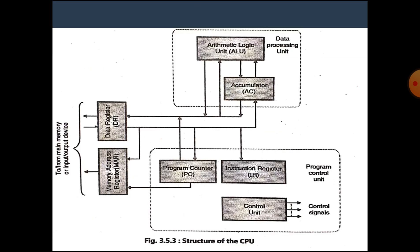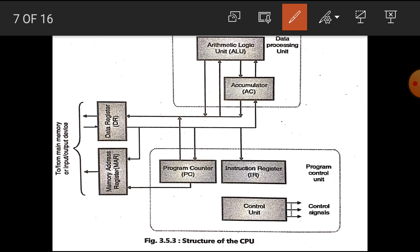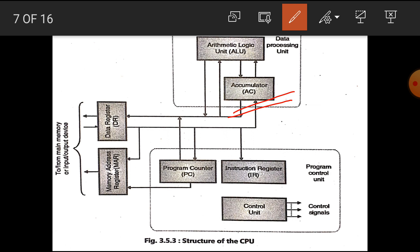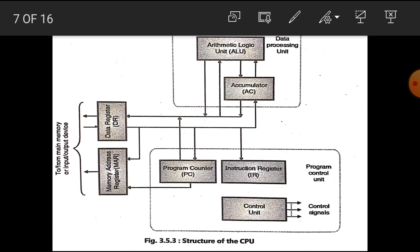In this diagram, we can see some registers. We can draw this diagram in an exam. There is a data processing unit which includes the arithmetic and logical unit, used to perform arithmetic as well as logical operations. One register here is named the accumulator — the most versatile register of the CPU. We can also see the program counter register, the instruction register, the control unit which provides control signals, the memory address register (MAR), and the data register (DR).